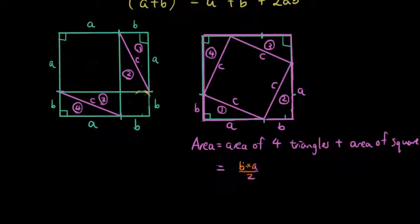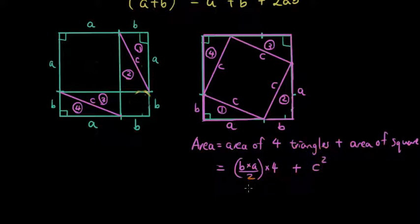Since there are four triangles, I'm going to multiply this by four, plus the area of the square in the middle. Since the square has a side length of C, the area is C squared. So expanding this out: 4 times AB divided by two gives 2AB, plus C squared.